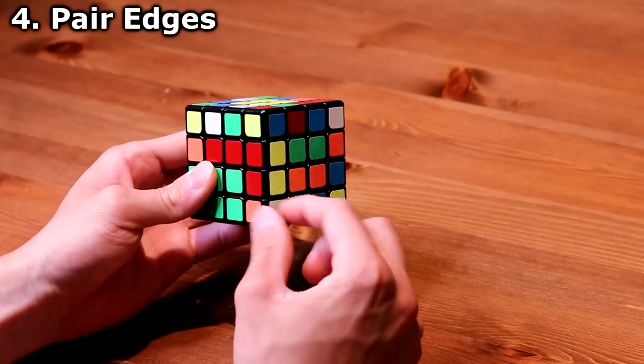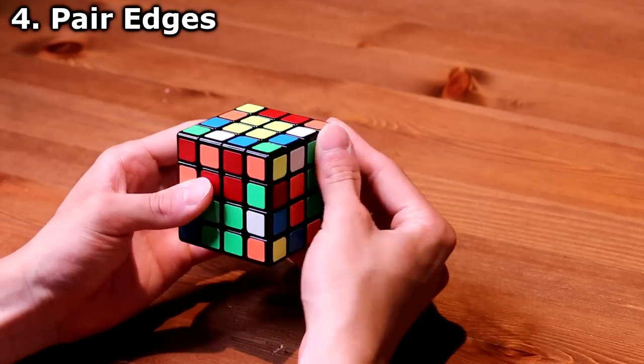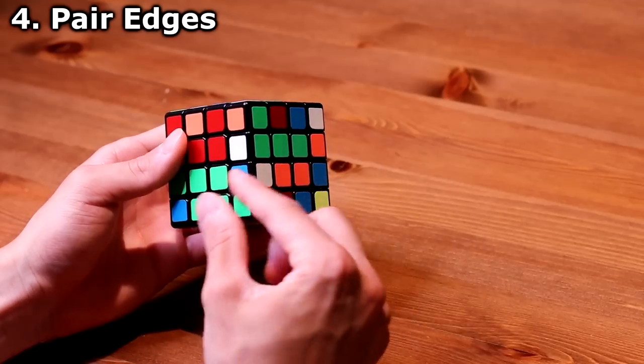it connects the two pieces like that, and then I move it to the top layer, bring an unsolved piece in place, put the layer back down, and then unslice it.